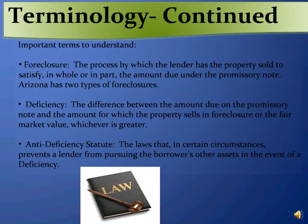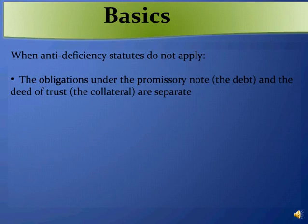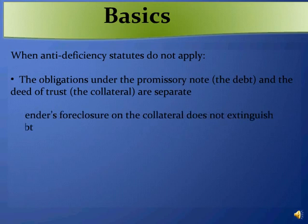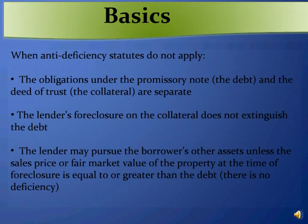It's important to understand some basic concepts before we get to the anti-deficiency statutes. When the anti-deficiency statutes do not apply, the obligations under the promissory note — the debt — and the deed of trust — the collateral — are separate, which means that the lender's foreclosure on the collateral does not extinguish the debt, and therefore the lender may pursue the borrower's other assets unless the sales price or fair market value of the property at the time of foreclosure is equal to or greater than the debt — in other words, unless there is no deficiency.